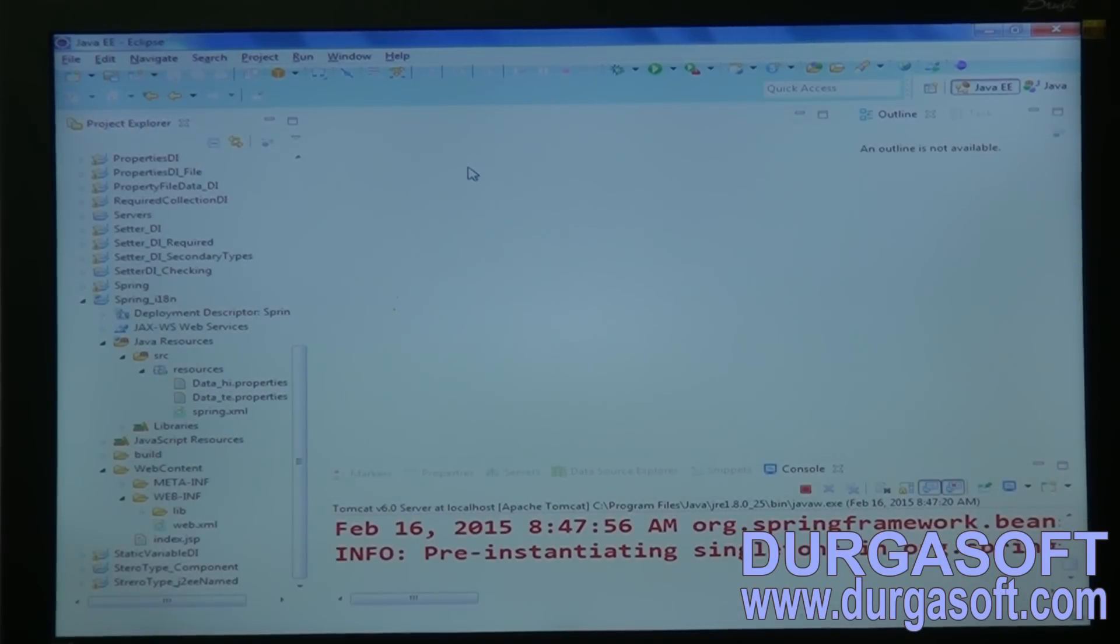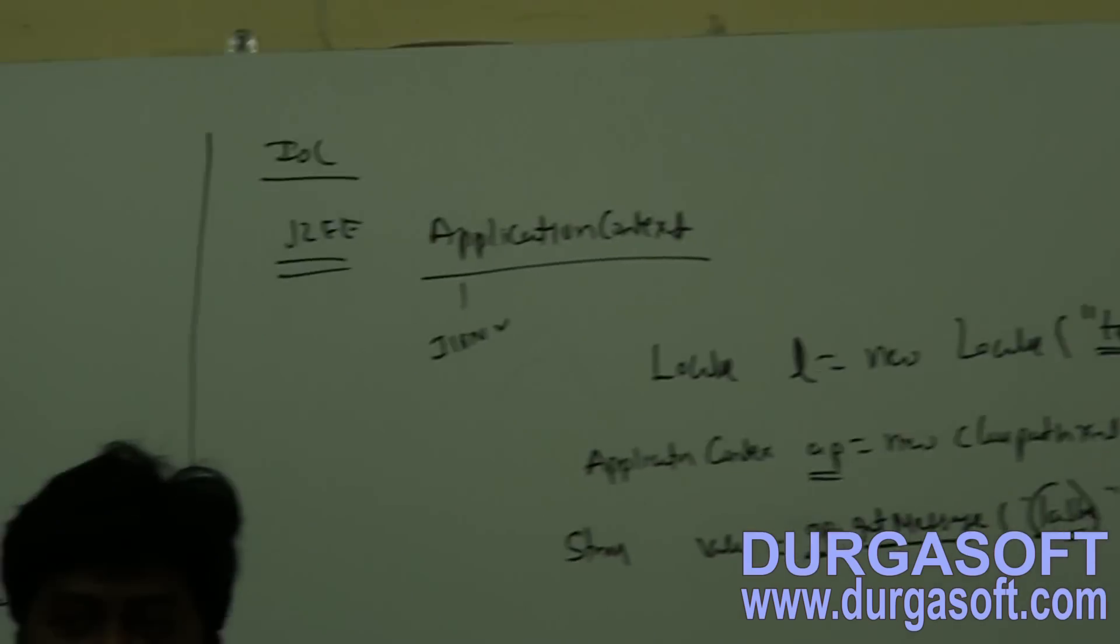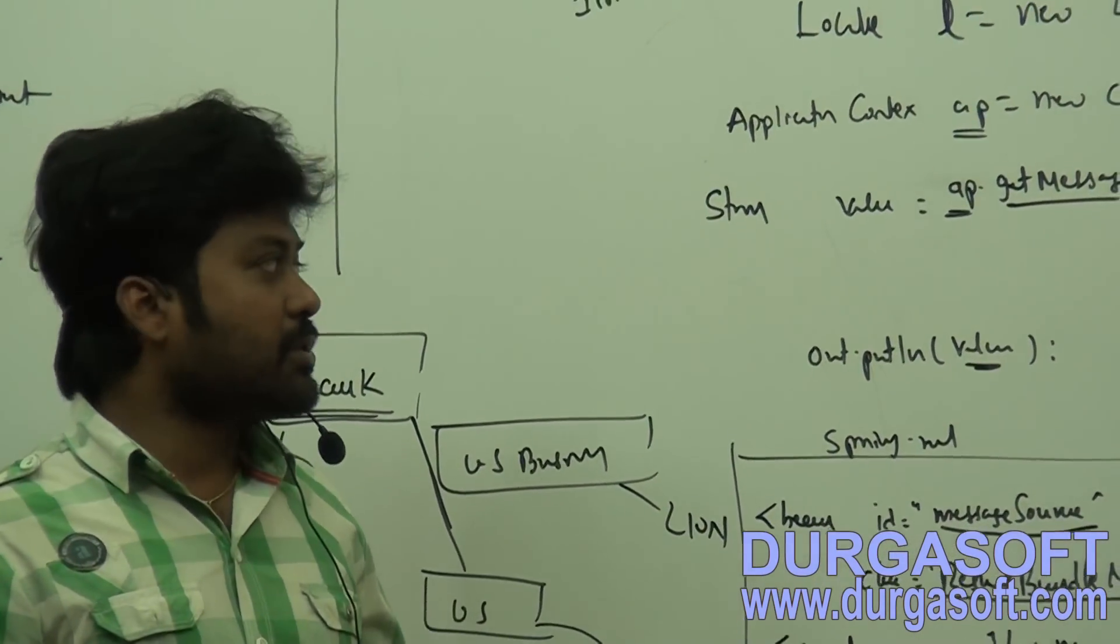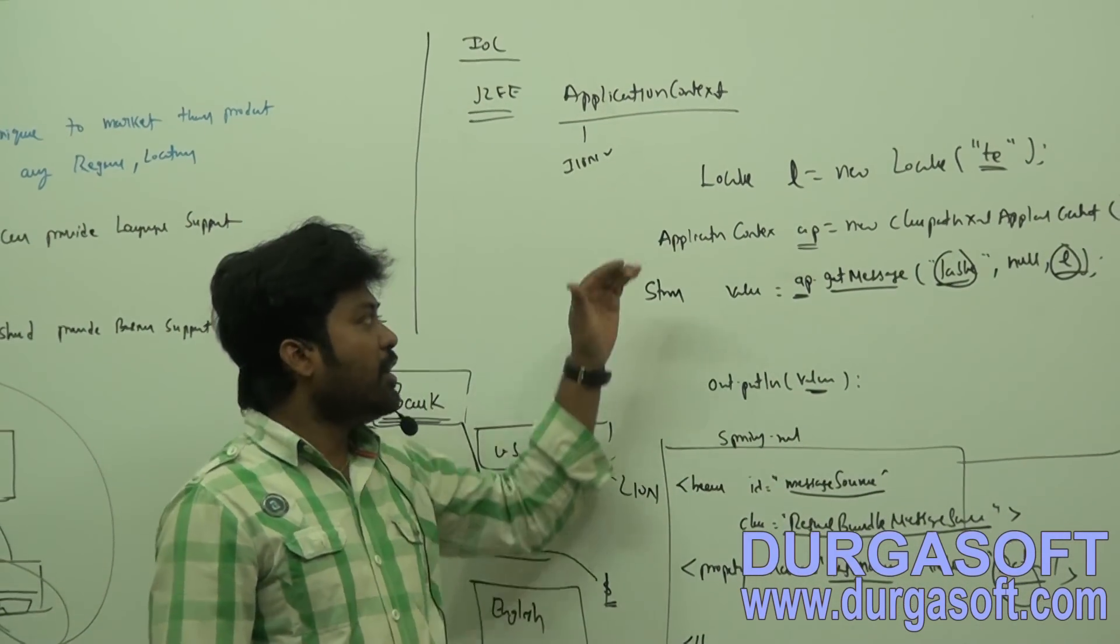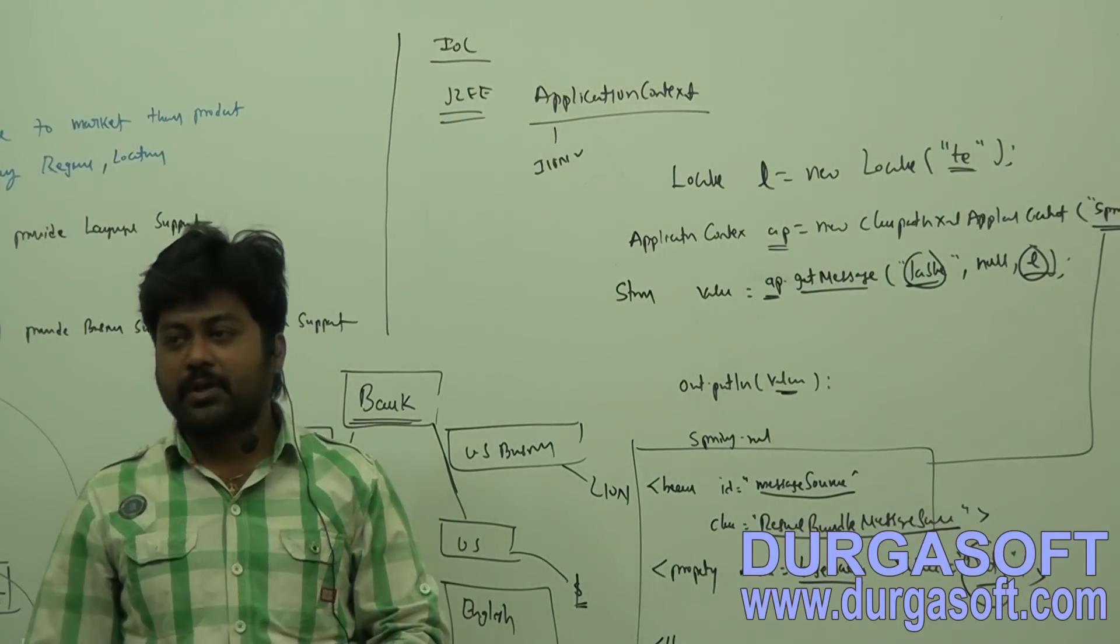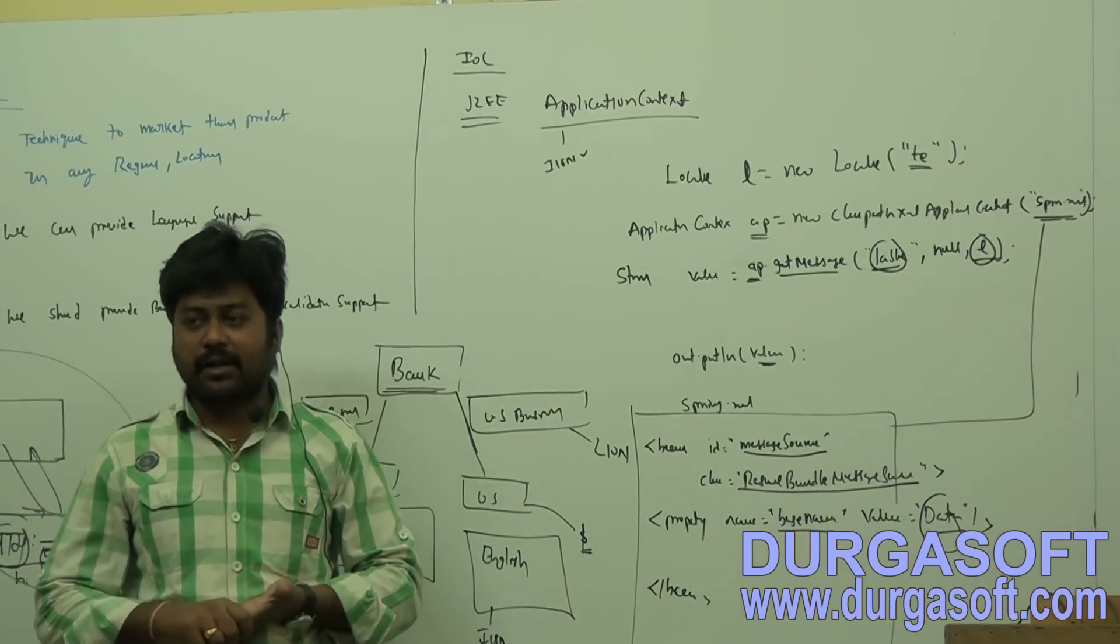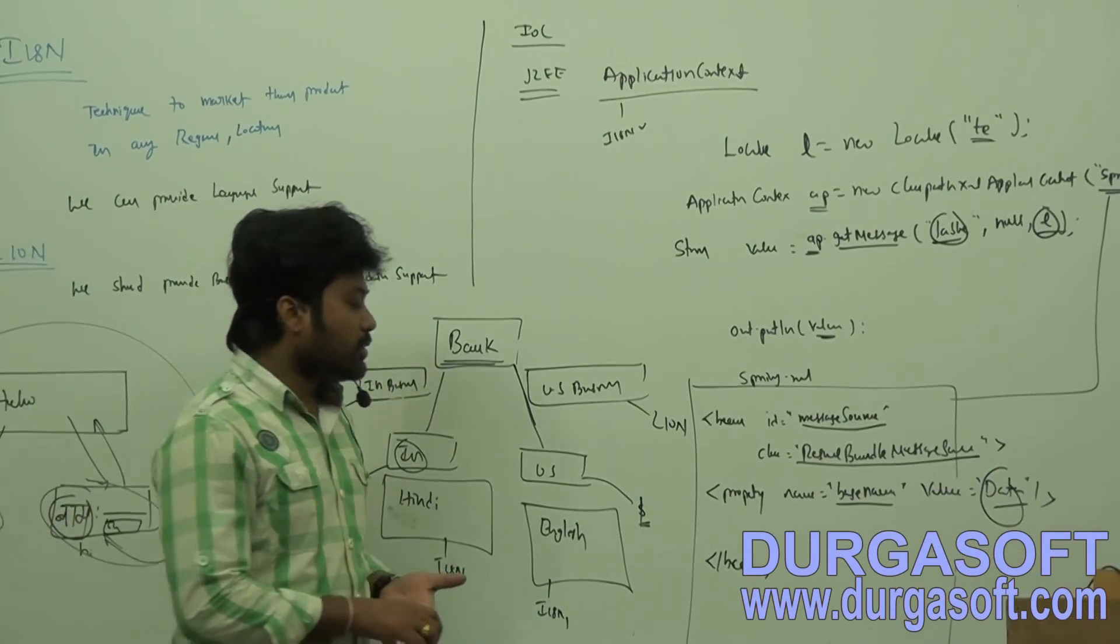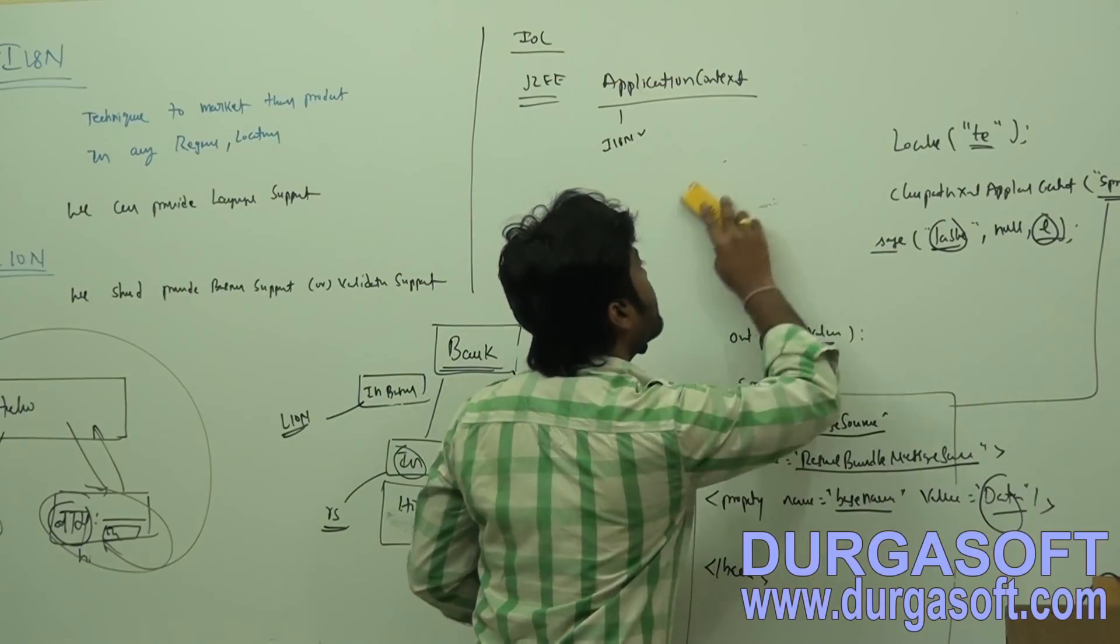But it is not useful for applications, this one is not useful. Just you just remember how to configure base name here. In case of web applications, Spring MVC web applications, we no need to write this type of code. To print value dynamically from properties file, you no need to write this much code. Just be given simple tag library. By writing that tag library, be given, like, if you know struts, in struts we have bean tags, bean colon message tag. So the same type of tag we have in Spring MVC.